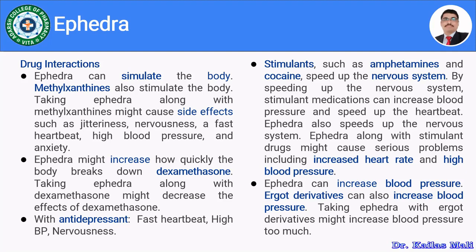Third, combining ephedra with antidepressants may cause fast heartbeat, high blood pressure, and nervousness. Stimulants such as amphetamines and cocaine also speed up the nervous system, so combining them with ephedra may cause serious side effects including increased heart rate and high blood pressure. One should not combine such stimulants with ephedra.